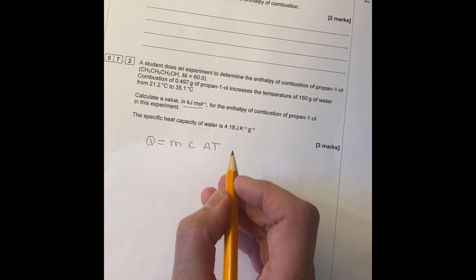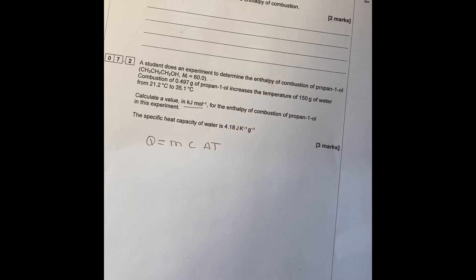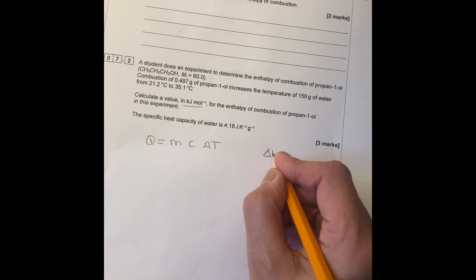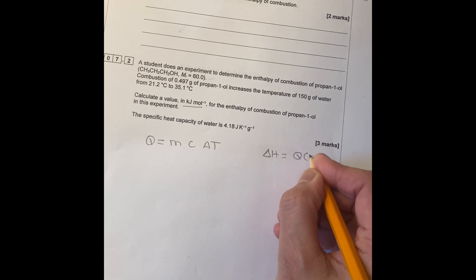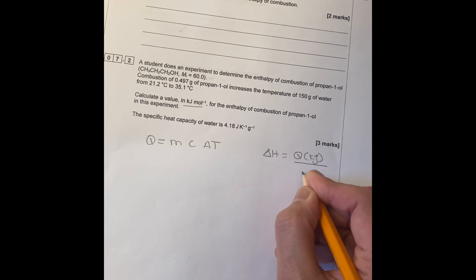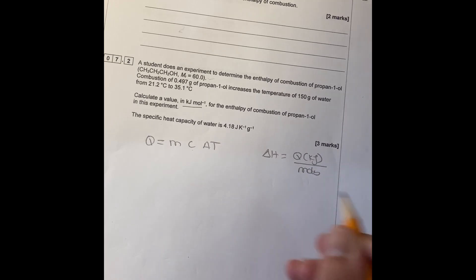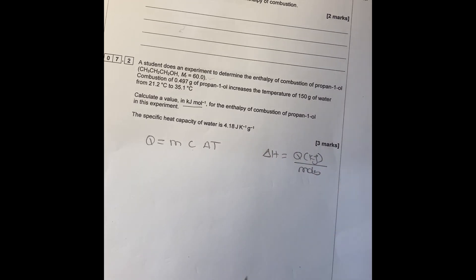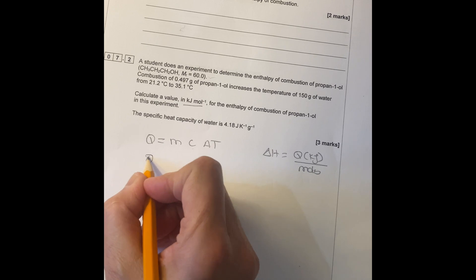You don't have to put a sign on the temperature there, just do the change. You also need delta H equals to Q in kJ divided by moles, and then you can find the enthalpy change. So let's work out Q first.